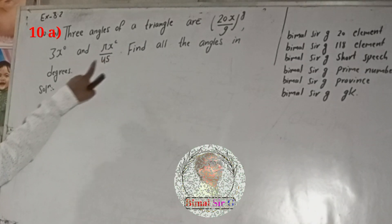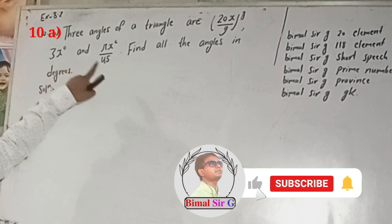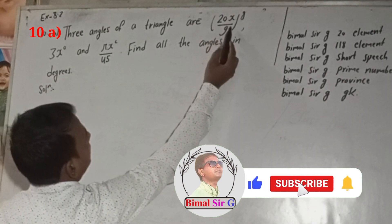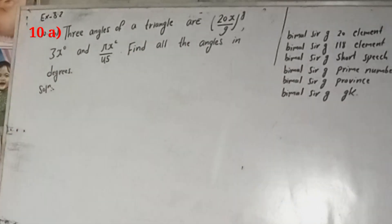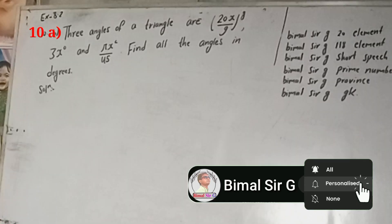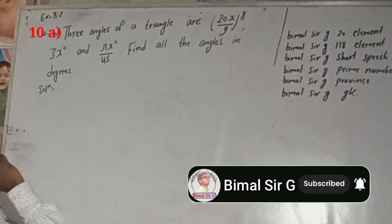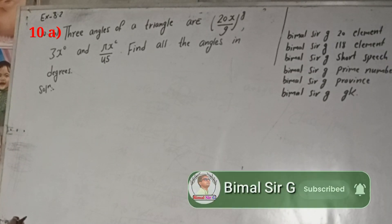So we have to find all the angles in degree. That means we have to convert this into degree, this itself is in degree, and this into degree, and then we will combine and solve. So now here we can write, three angles of a triangle are this much.